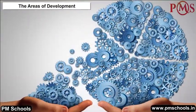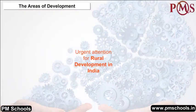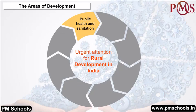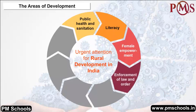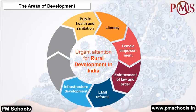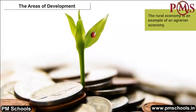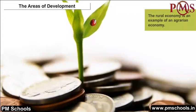The areas where urgent attention is needed for rural development in India are: Public Health and Sanitation, Literacy, Female Empowerment, Enforcement of Law and Order, Land Reforms, Infrastructure Development like Irrigation and Rural Electrification, Availability of Credit, Eradication of Poverty, and so on. The rural economy is an example of an agrarian economy.